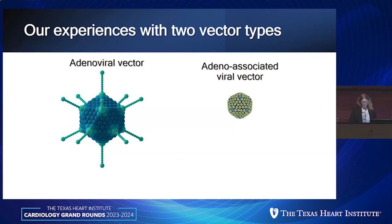AAV is very small and has a limited packaging capacity, but adeno-associated viral vectors are at this moment really the most clinically relevant vector. There are now five FDA-approved products utilizing adeno-associated viral vectors for gene therapies, mostly for rare diseases.